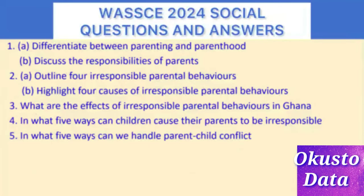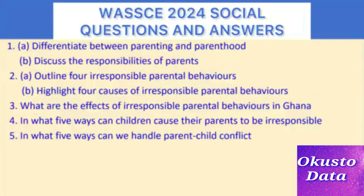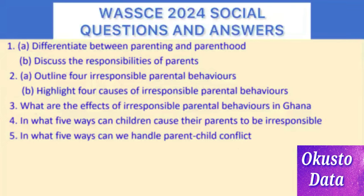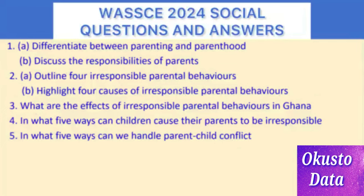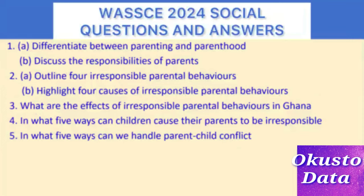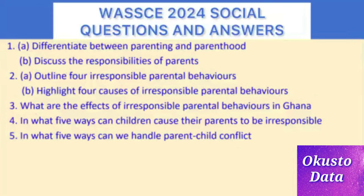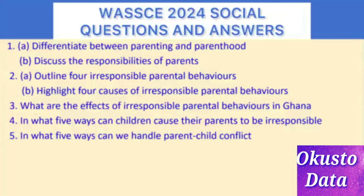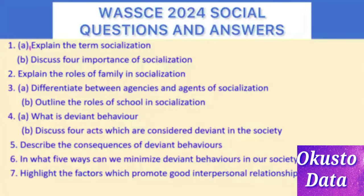Try solving these. Question 1: (a) Differentiate between parenting and parenthood. (b) Discuss the responsibilities of parents. Question 2: (a) Outline four irresponsible parental behaviors. (b) Highlight four causes of irresponsible parental behaviors. Question 3: What are the effects of irresponsible parental behaviors in Ghana? Question 4: In what five ways can children cause their parents to be irresponsible? Question 5: In what five ways can we handle parent-child conflict?